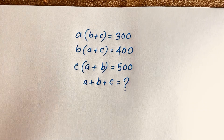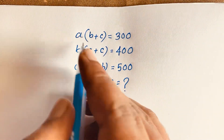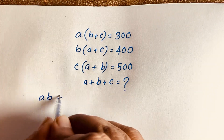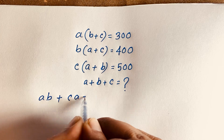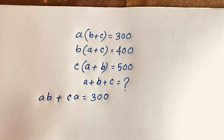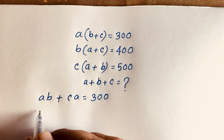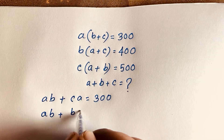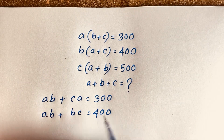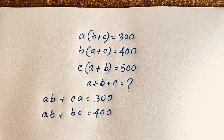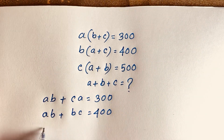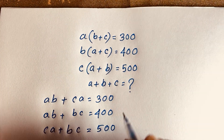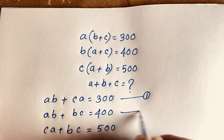Looking at the first equation, if I multiply out I get ab plus ca equals 300. From the second equation I get ab plus bc equals 400. And from the third equation I get ca plus bc equals 500. So we have these three expanded equations.